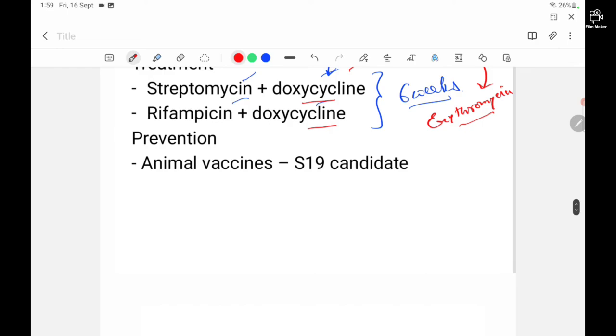For prevention, as of now there are no preventive vaccines against Brucella. The only vaccines are given to animals - there are some animal vaccines. The S19 candidate is the most successful among the lot.